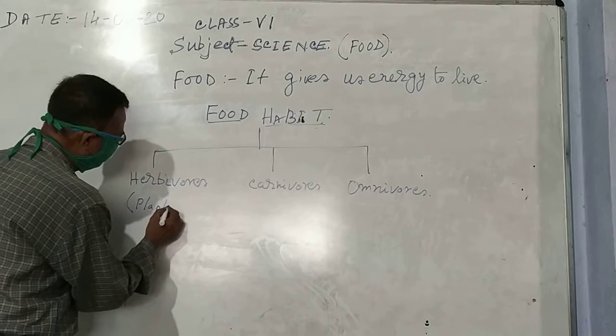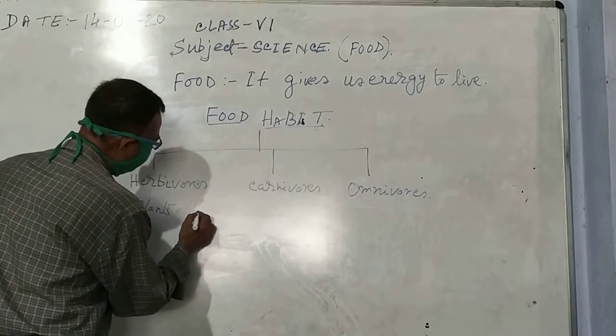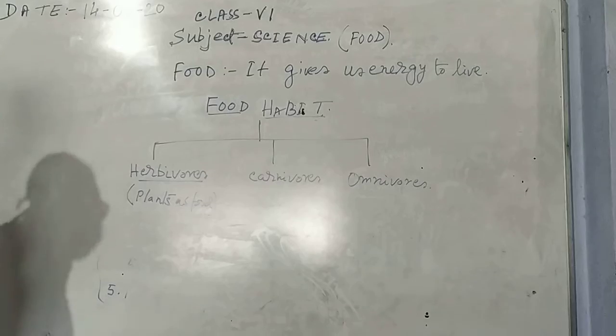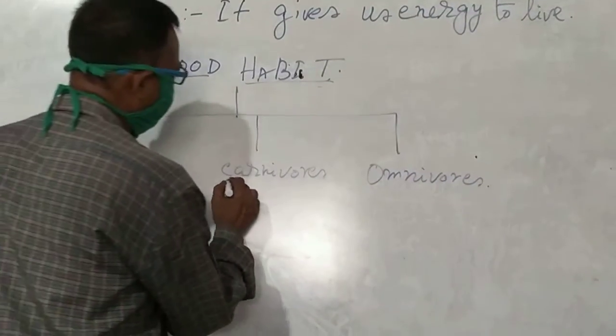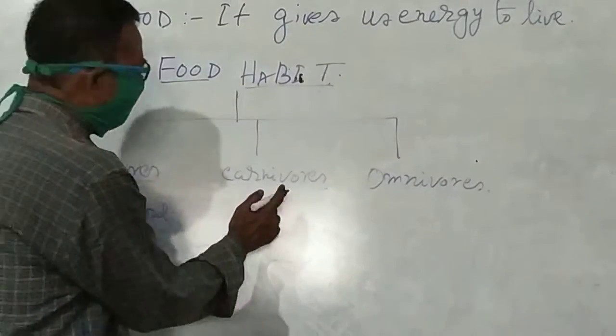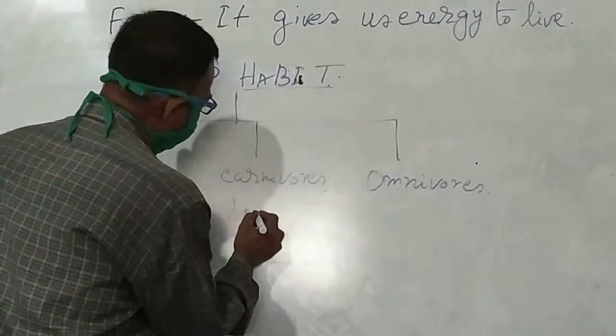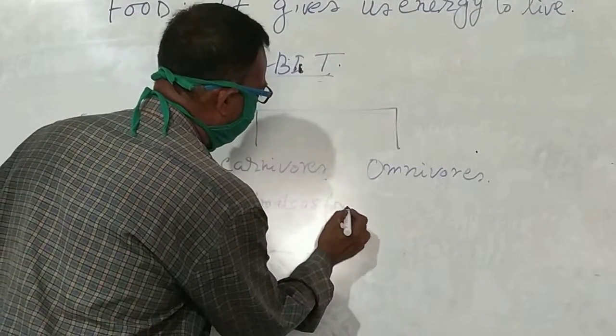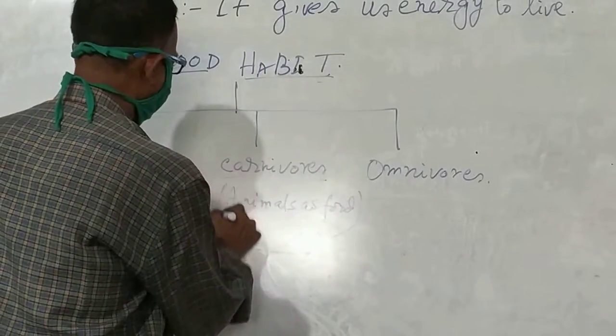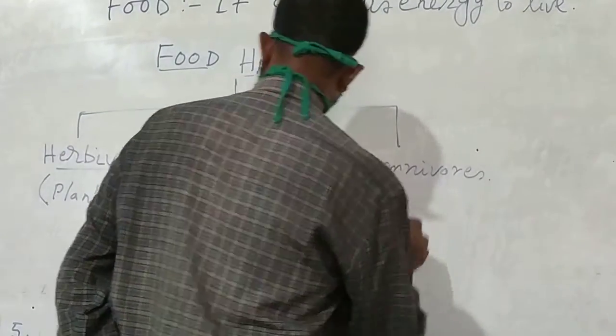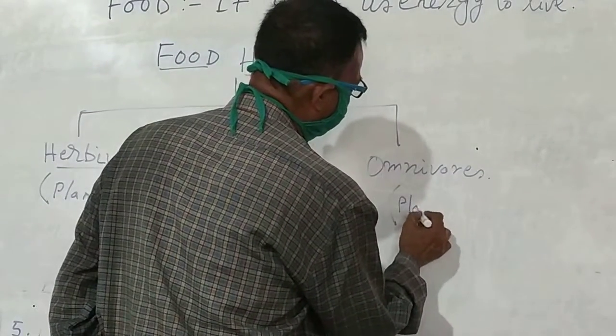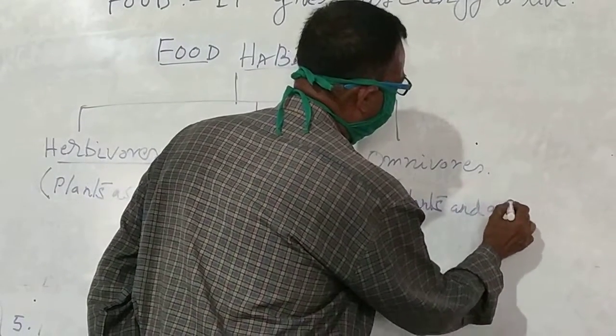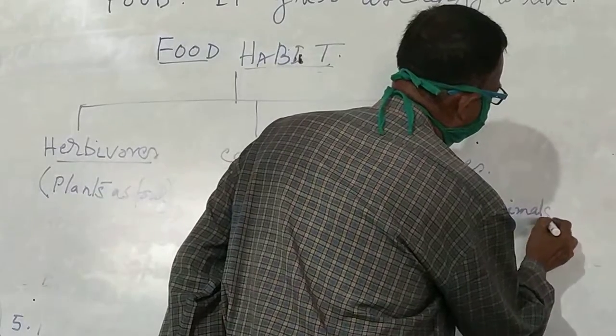Herbivores. Carnivores, they are animals as food. And omnivores, they are plants and animals.